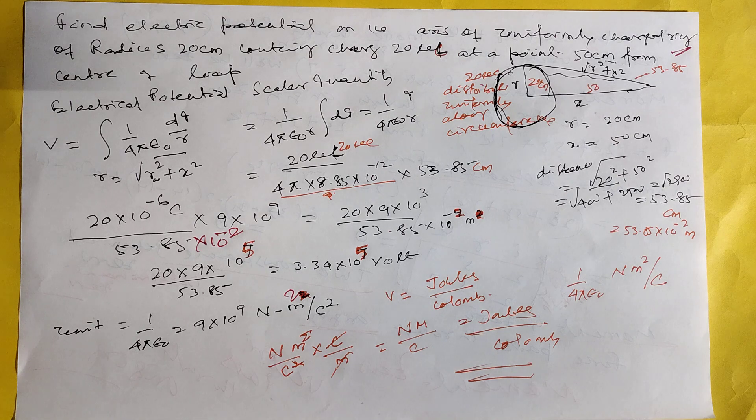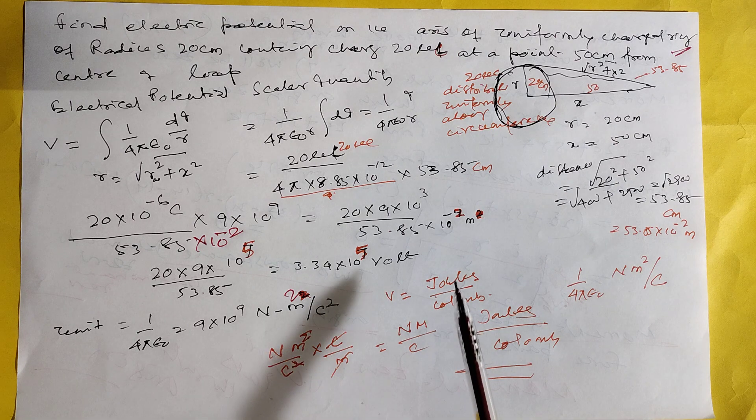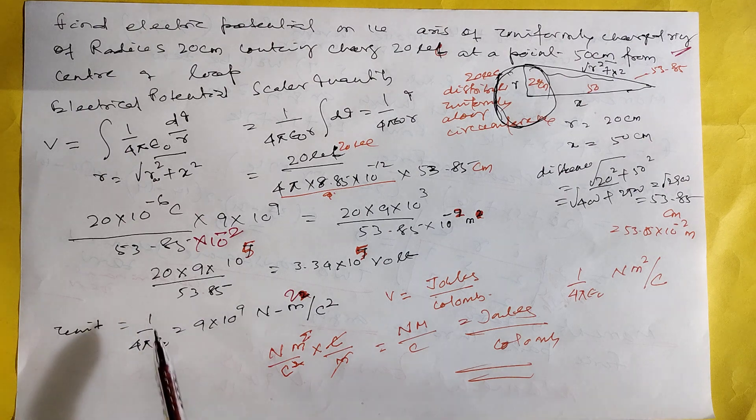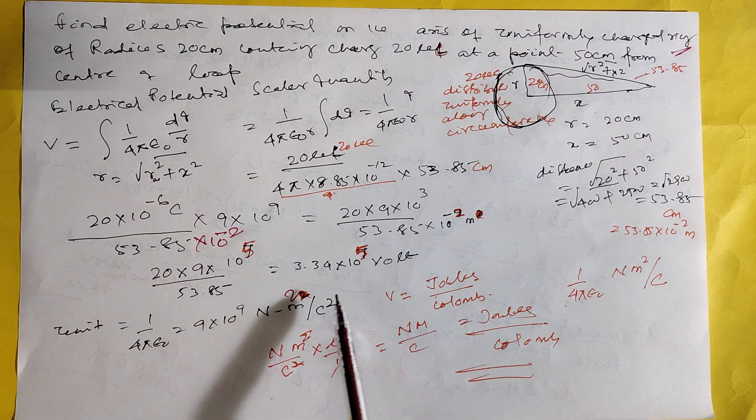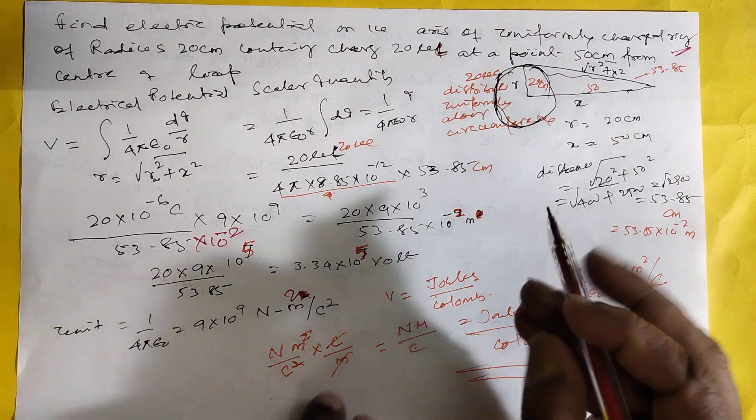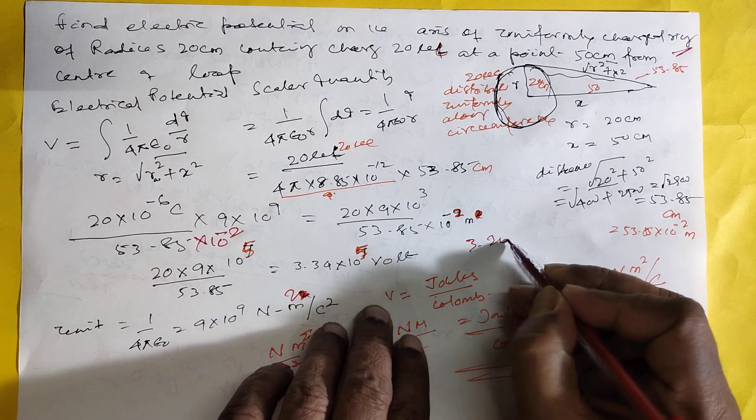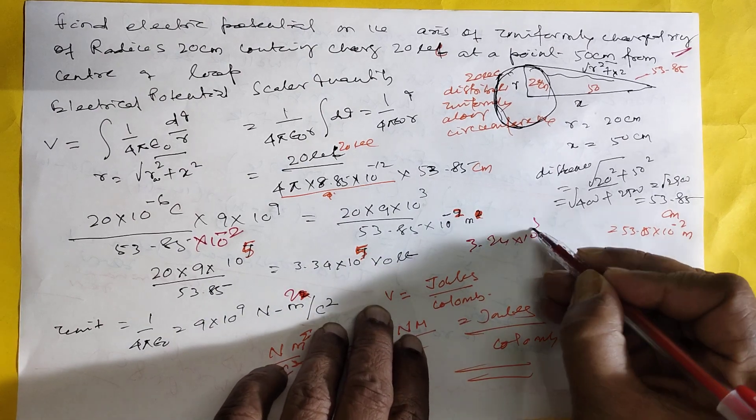So automatically it is coming 3.34 times 10 to minus 5 volt.